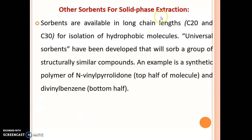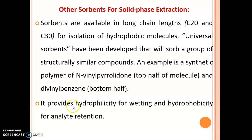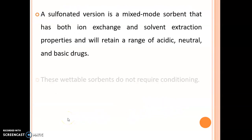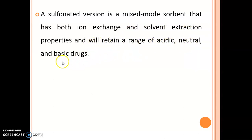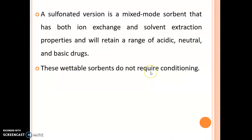Other sorbents for solid phase extraction include sorbents available in long chain lengths such as C20 and C30 for isolation of hydrophobic molecules. Universal sorbents have been developed that will isolate a group of structurally similar compounds. An example is a synthetic polymer of N-vinylpyrrolidone (top half of molecule) and divinylbenzene (bottom half). It provides hydrophilicity for wetting and hydrophobicity for analyte retention. A sulfonated version is a mixed-mode sorbent with both ion exchange and solvent extraction properties, retaining a range of acidic, neutral, and basic drugs. These wettable sorbents do not require conditioning.